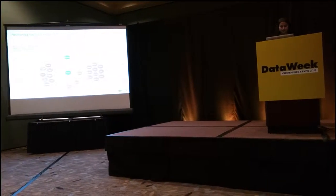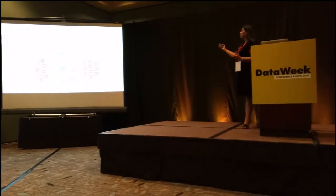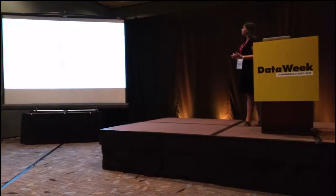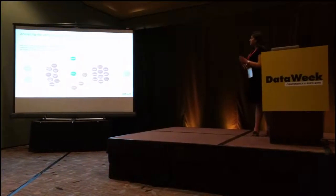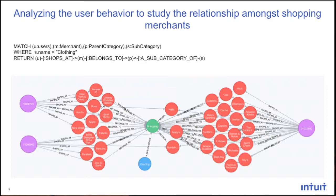Here is an example of finding what merchants users are visiting in the clothing domain, using Neo4j's simple Cypher query language. We can easily find that two users go to Top Shop and two users use H&M. In this example, we write a query with a subcategory filter like clothing, and we can derive how users interact with merchants. The relationship is: user shops at merchant M, which belongs to subcategory S, which is a subcategory of the parent category.